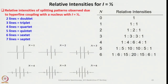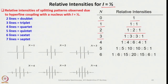Now let us look at the relative intensities for i equals 1/2, i equals 1, and i equals 3/2. We use Pascal's triangle, just as in NMR. For N=0 we see one line; N=1 gives 2 lines; N=2 gives 3 lines with intensity ratio 1:2:1; N=3 gives 4 lines with ratio 1:3:3:1; N=4 gives 5 lines with ratio 1:4:6:4:1, and it continues like this.